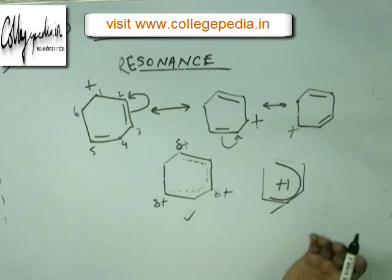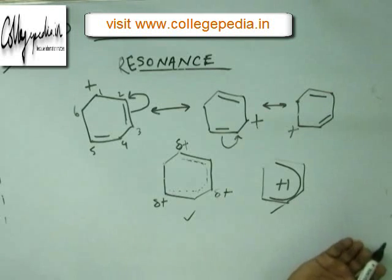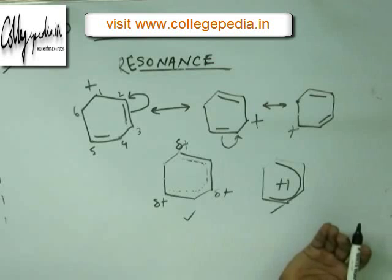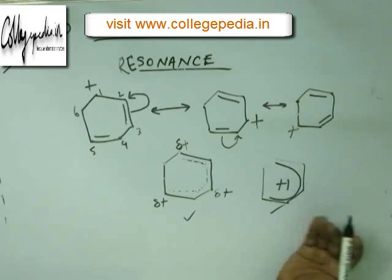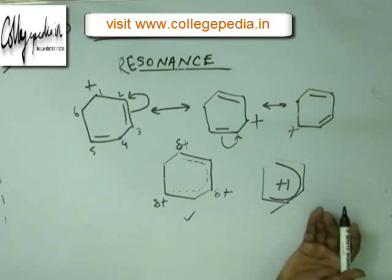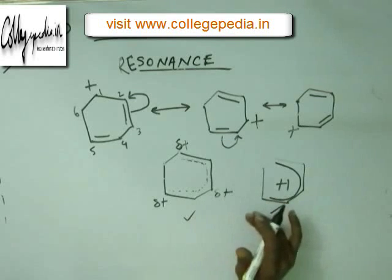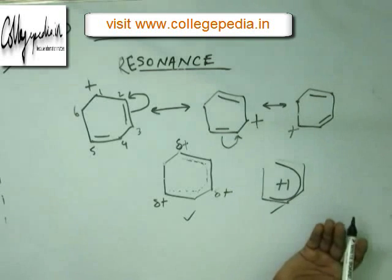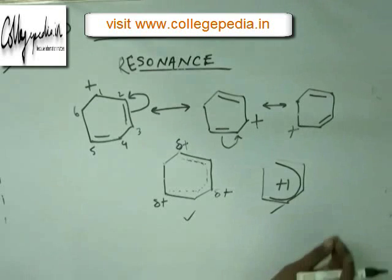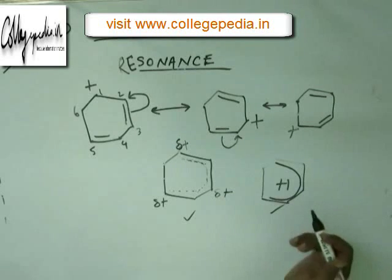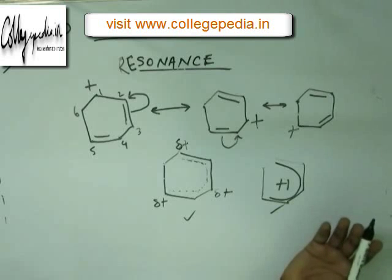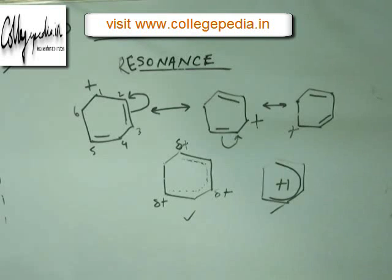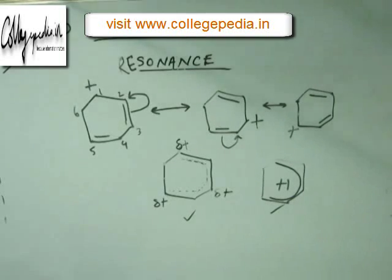So this is all about drawing resonating structures and the resonance hybrid. Now, why did we study this? One thing we already know: resonance brings about stability — it distributes the charge, decreases the potential energy, decreases the charge density, and brings about stability. The main reason resonance occurs is to bring about stability in the molecule. But the consequences of resonance don't stop here; we have a lot more to discuss about resonance, which we will see in the next lecture. Thank you very much.